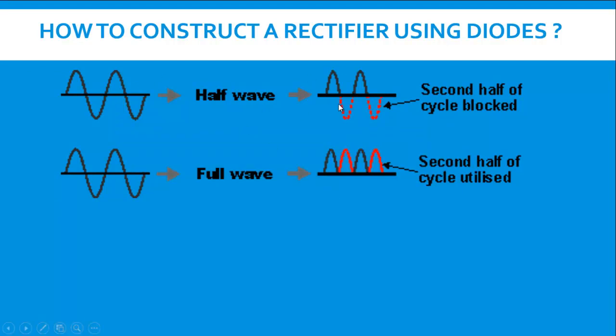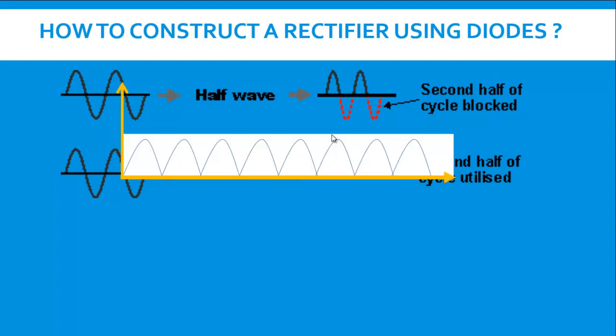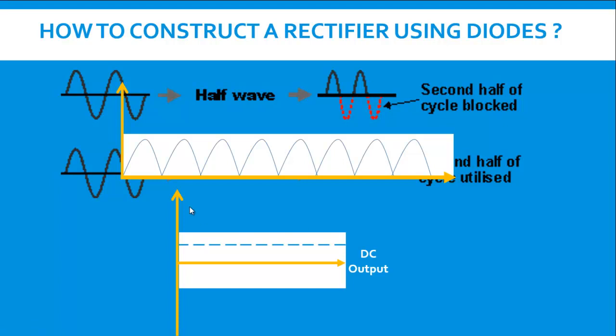We saw in the half wave rectifier only the positive half of the sinusoidal wave was across the load and the negative half was blocked. Whereas in a full wave rectifier both the positive as well as negative half are utilized. So if we find the average of this voltage we will still get some net DC value but still it is far away from the requirement initially that we want a DC value which is nearly a straight line.